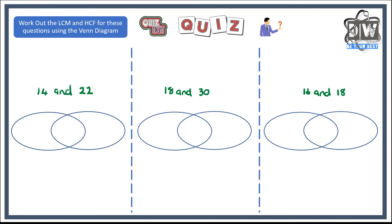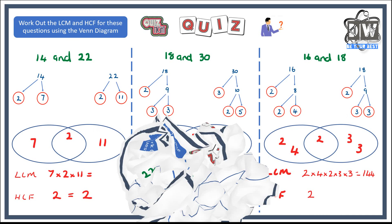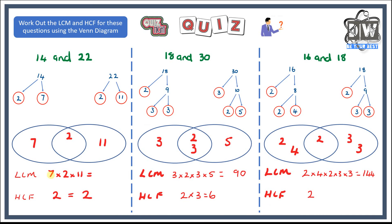Time for our answers! For 14 and 22: the lowest common multiple is 7 times 2 times 11, which gives 154, and the highest common factor is 2 in the middle. For the next pair, the lowest common multiple is 3 times 2 times 3 times 5, which gives 90, with highest common factor 2 times 3 equals 6.